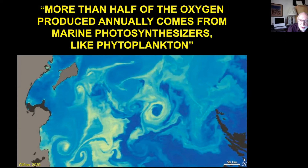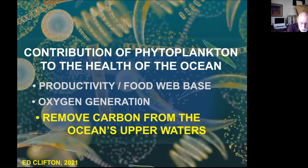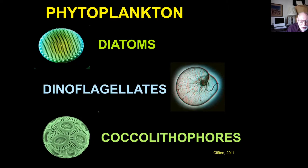Phytoplankton also remove carbon from the ocean's upper waters, and we'll talk more about that as we go along. We're going to discuss three different phytoplankton groups: diatoms, dinoflagellates, and coccolithophores, and we're going to start with the diatoms.